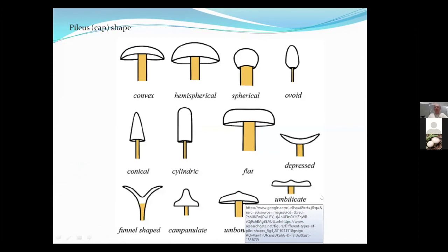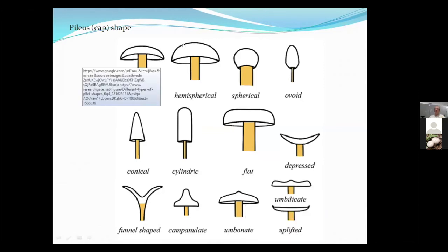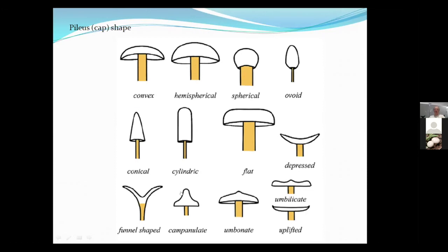Cap shape is really important. It could be convex — typical mushroom shape — hemispherical, almost spherical, ovoid or egg-shaped, depressed, cylindric, conical, campanulate or bell-shaped, or umbonate and mammiform with a little blip on top. Let's look at some mushrooms featuring these characteristics.